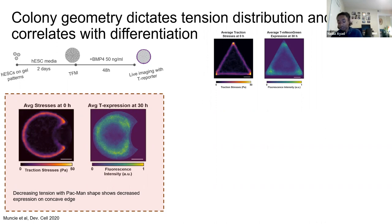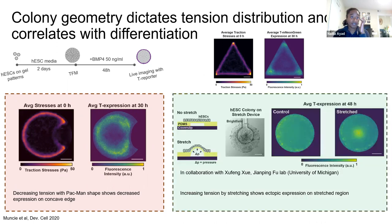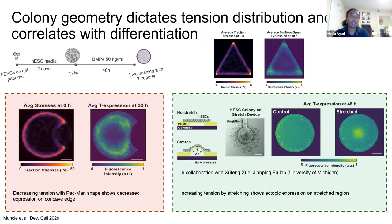Conversely, using a PDMS stretch device in collaboration with the Jianping Fu lab at the University of Michigan—where air is added to stretch a PDMS layer and impart ectopic tension on cells—we see ectopic expression of T compared to a control. This shows a tight correlation between mechanical forces and mesoderm differentiation in our system.